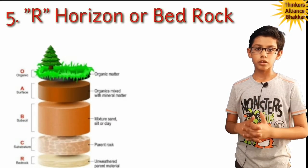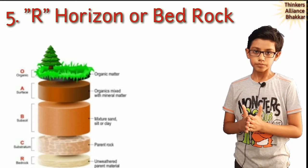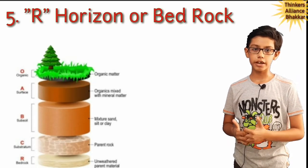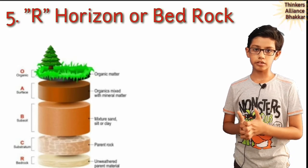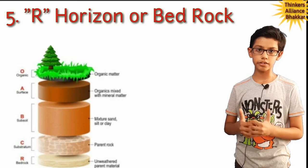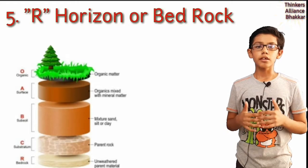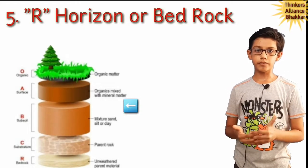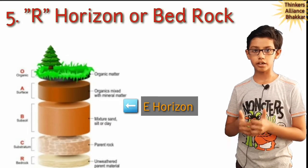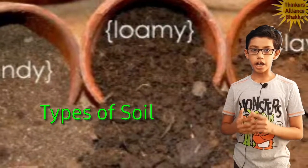Number five, R horizon or bedrock. R horizon is the bottom layer of the soil. R horizon is made up of masses of rocks such as granite and quartzite. There is also a layer between the A and B horizon known as the E horizon.